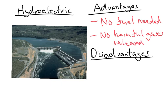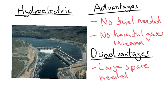The disadvantages are they take up a large amount of space, and some people who live where the river used to be before it was dammed could lose their houses.